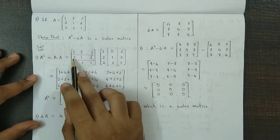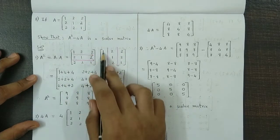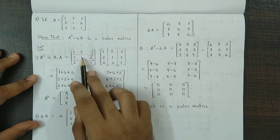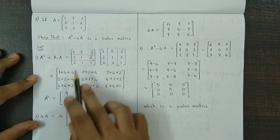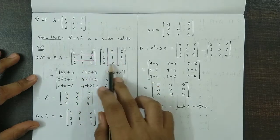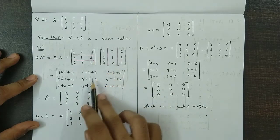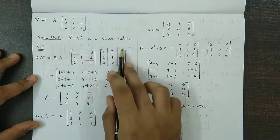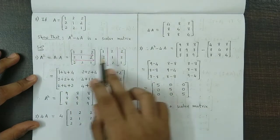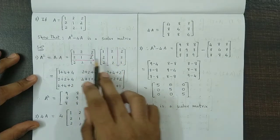Now moving to R2. R2 into C1 will be 2 plus 4 plus 4. R2 C2 will be 4 plus 1 plus 4. R2 C3 will be 4 plus 2 plus 2.